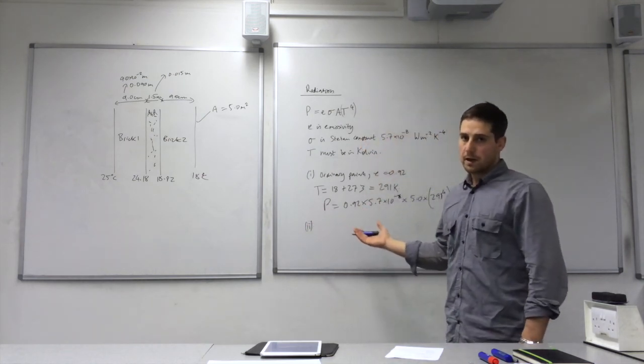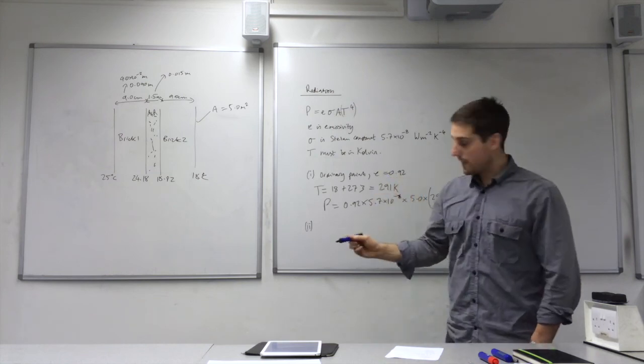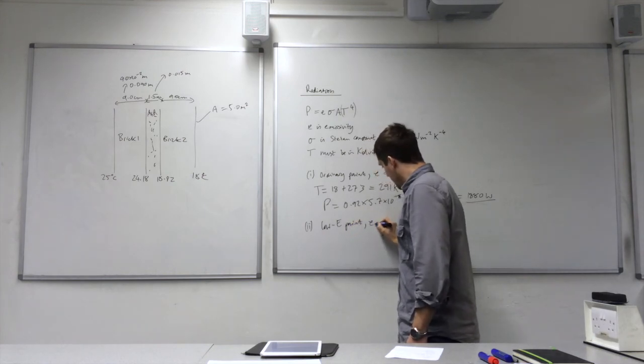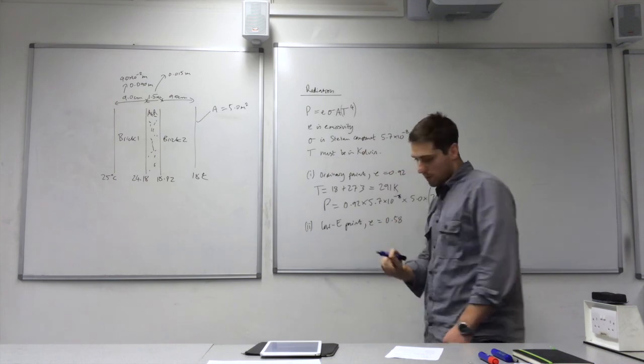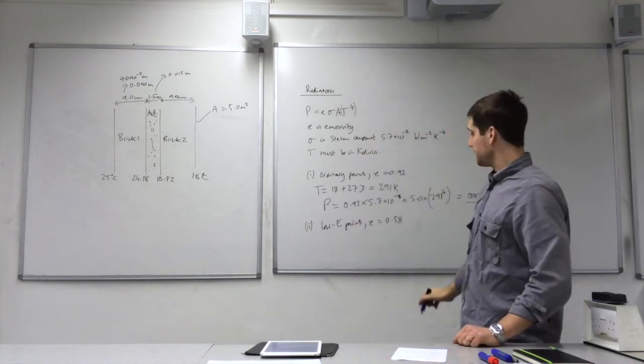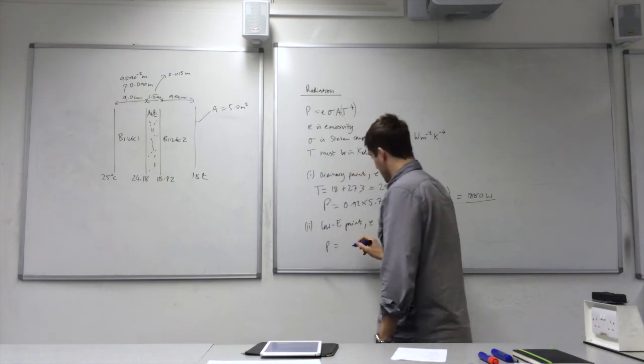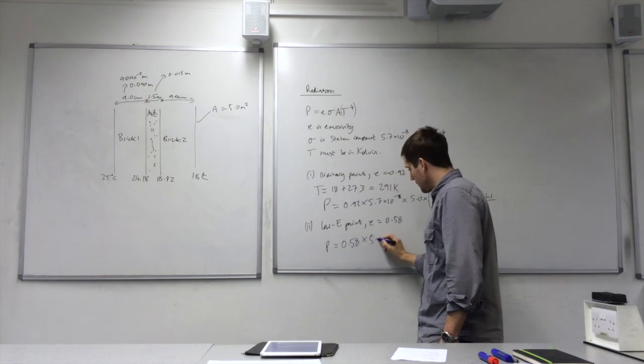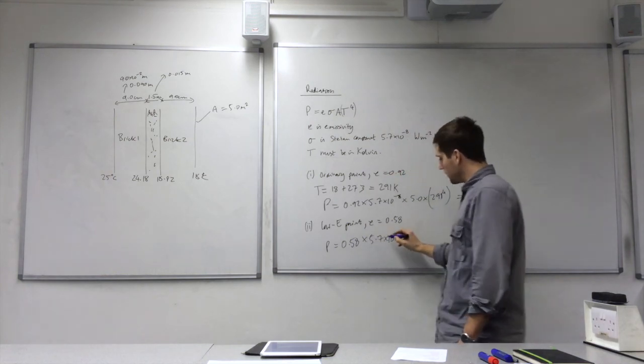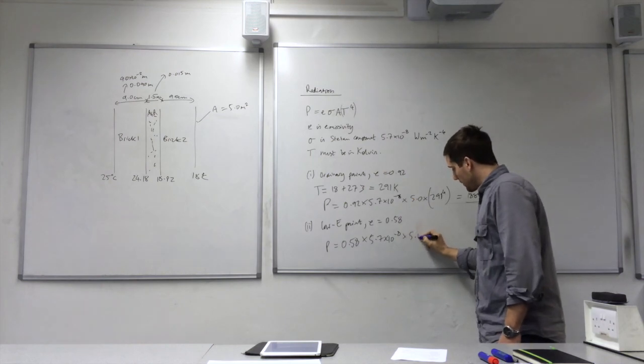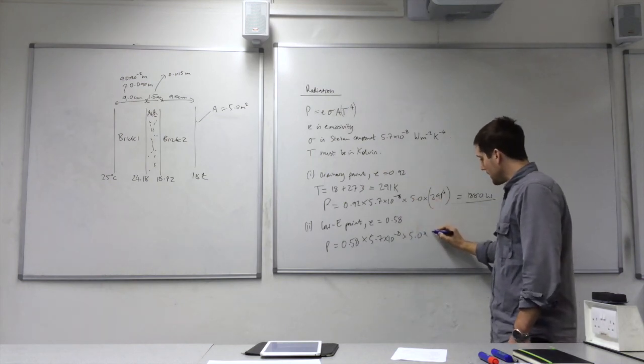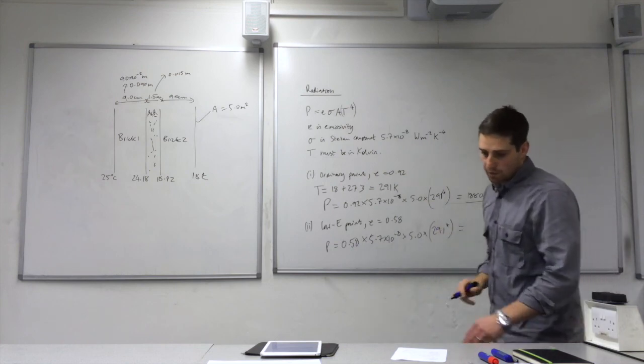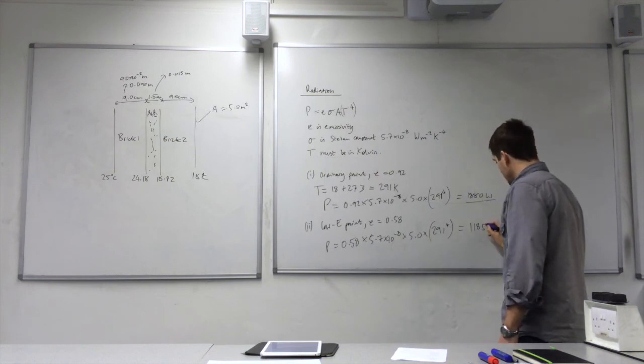Question 2, we do the same calculation, except we use low E paint here. Which has an emissivity value of 0.58. Put that into the equation, so 0.58, times by 5.7 times 10 to the minus 8, you can see I'm using the same constant. Times by 5, because the surface area doesn't change, and then times by 291 to the power of 4, because the temperature didn't change either. And we'll get a value of 1185 watts.